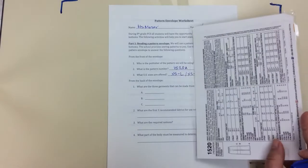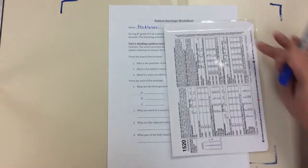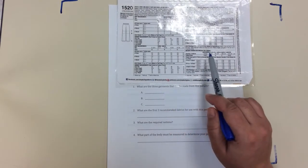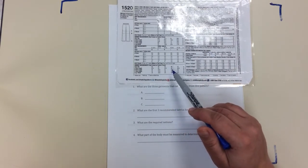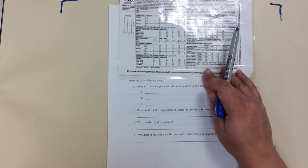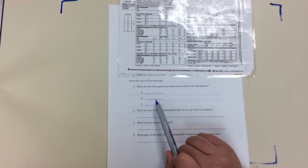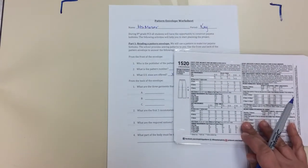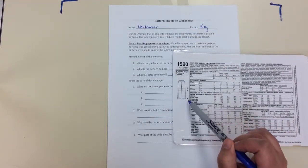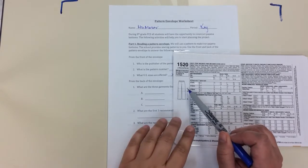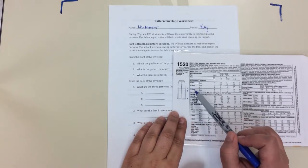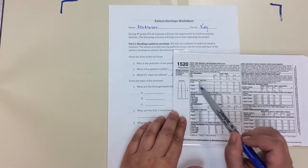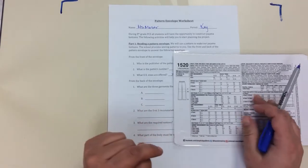All right, now we're going to flip over to the back of the envelope. The information on the back is in English and French. Obviously most of us are going to be looking at the English side. We're going to start by figuring out what are the garments that we can make using this pattern. If you come over here you can see a picture labeled ABC. On our pattern over here you can see that A makes pants, B makes shorts, and C makes shorts.